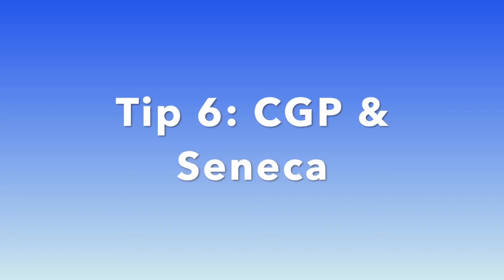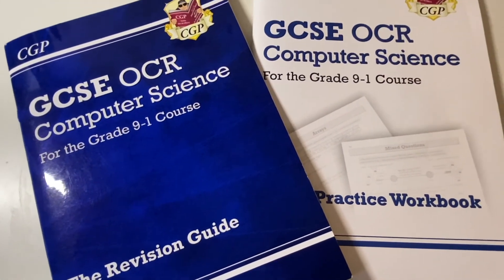The sixth tip is to use other resources like CGP books and Seneca. For CGP books, they can be really useful — both the exam practice workbook and the revision guide, which I'll put on the screen here. The revision guide is great for going over content you didn't quite understand, and the exam practice workbook has loads of exam style questions, which are really helpful especially because it's a newer specification so you don't have that many past papers available.